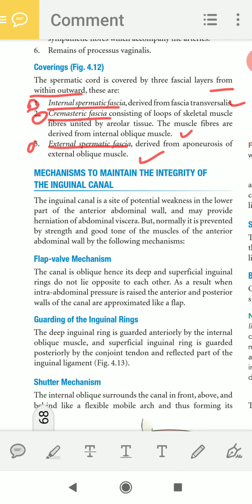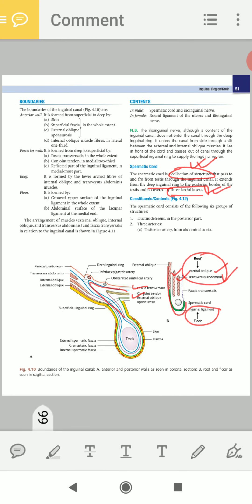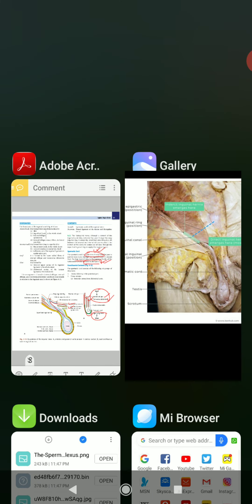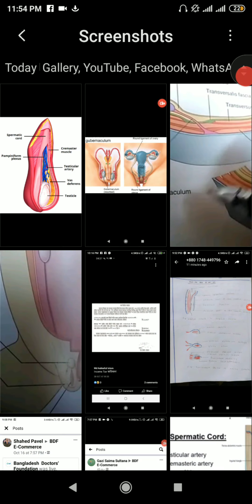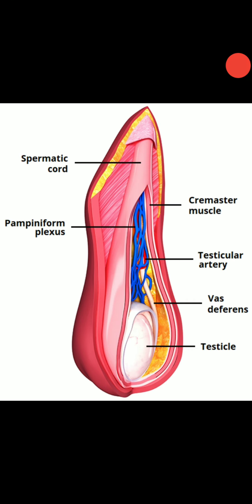Now let's look at the contents within the spermatic cord. This picture will be much helpful. The spermatic cord passes within the inguinal canal then goes downwards into the scrotum, carrying structures to and from the testes. The number one content is the vas deferens, or ductus deferens. Number two, it contains three arteries: the cremasteric artery, testicular artery, and artery to the vas deferens.